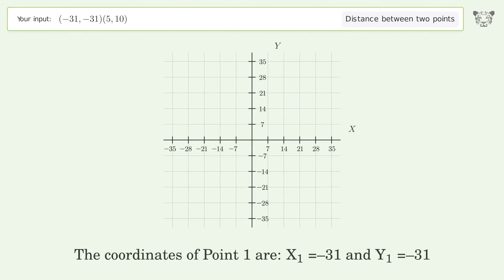The coordinates of point 1 are x1 equals negative 31 and y1 equals negative 31. The coordinates of point 2 are x2 equals 5 and y2 equals 10.